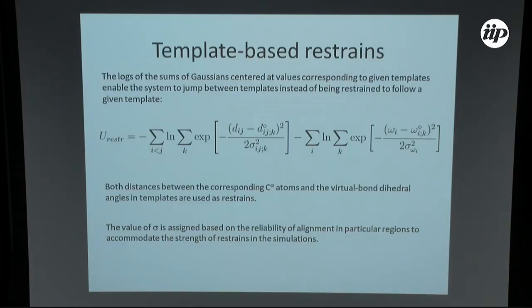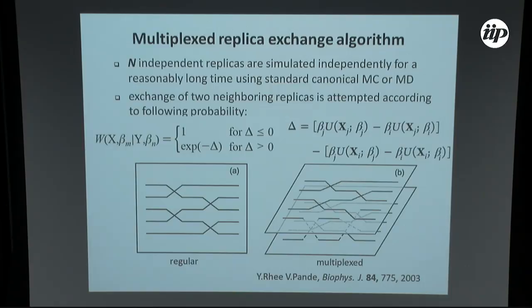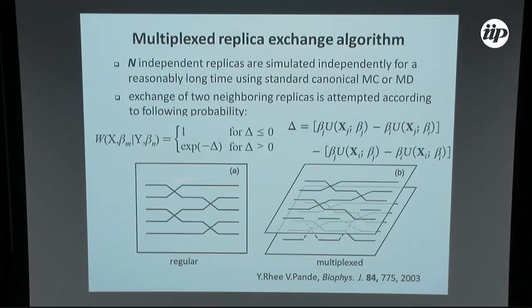For simulations, in the beginning of UNRES used for protein structure prediction we mainly used global optimization methods, but now we shifted to replica exchange molecular dynamics. We also moved from regular molecular dynamics with only one trajectory per temperature to several trajectories per temperature. This idea was introduced by Rhee and Pande, and they named it multiplex replica exchange. This way we can use larger simulations, and we showed that convergence is faster. It's better to add different layers than to add more temperatures, to avoid exchange communication problems.